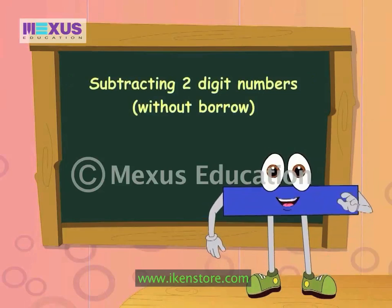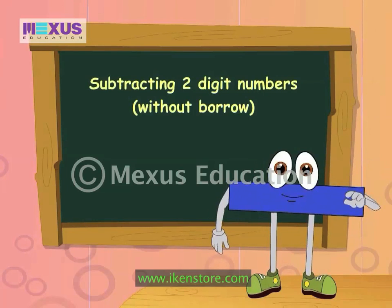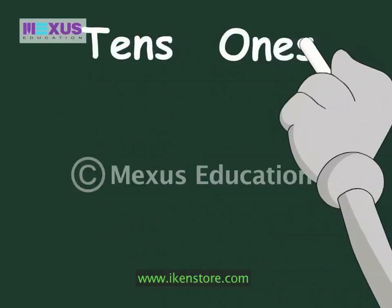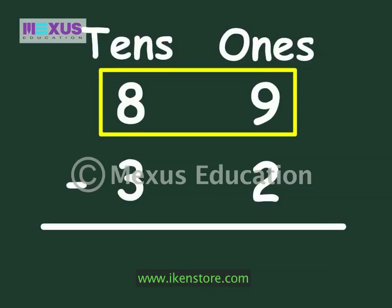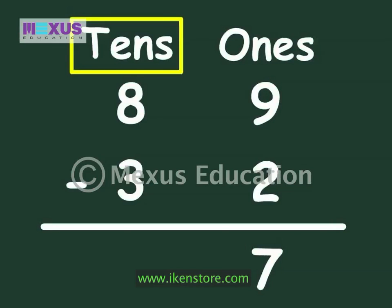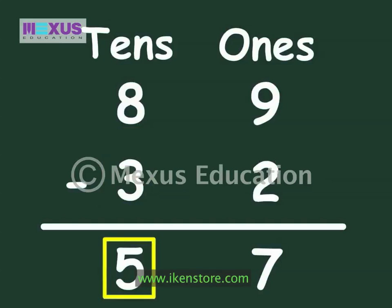Do you know how to subtract two-digit numbers? Well, let me show you how. Let us subtract 32 from 89. First, write the two numbers on top of each other. Always remember to put the larger number on the top. Subtract the ones place first. Nine minus two is seven. Now let us subtract the numbers at the tens place. Eight minus three is five. So the answer is 57.